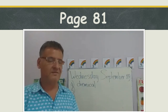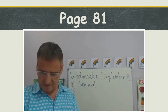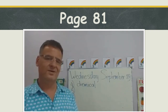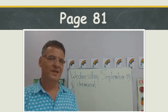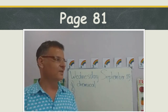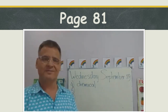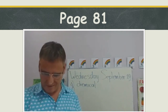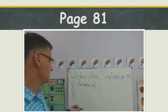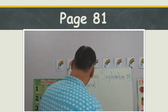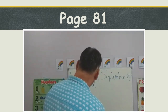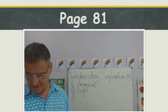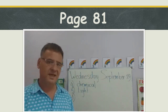Number five: some kind of energy allows us to see the things around us. When it's dark, what do we need? We need light. So the answer is light energy — with a capital letter because it's the first word of the sentence. Light energy allows us to see the things around us.